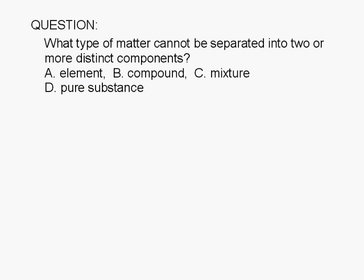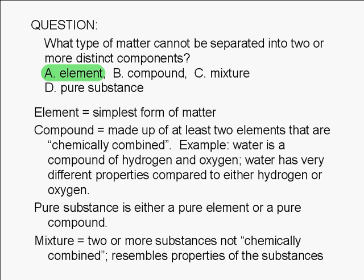The correct answer is A. By definition, an element is the simplest form of matter. It cannot be made by combining simpler elements and it cannot be separated into two or more distinct components.